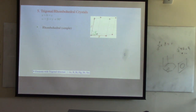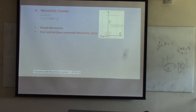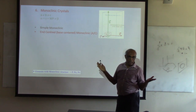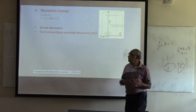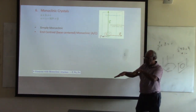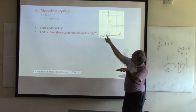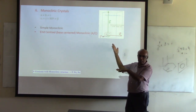The rhombohedral structure has all A, B, C equal, but alpha, beta, gamma are all equal to each other but not 90 degrees. For monoclinic, there is very little symmetry — two angles are 90 degrees but the third can be any arbitrary angle, and A, B, C are all unequal. If you can shear a monoclinic cell to make alpha and gamma not equal to 90 degrees, it becomes triclinic.